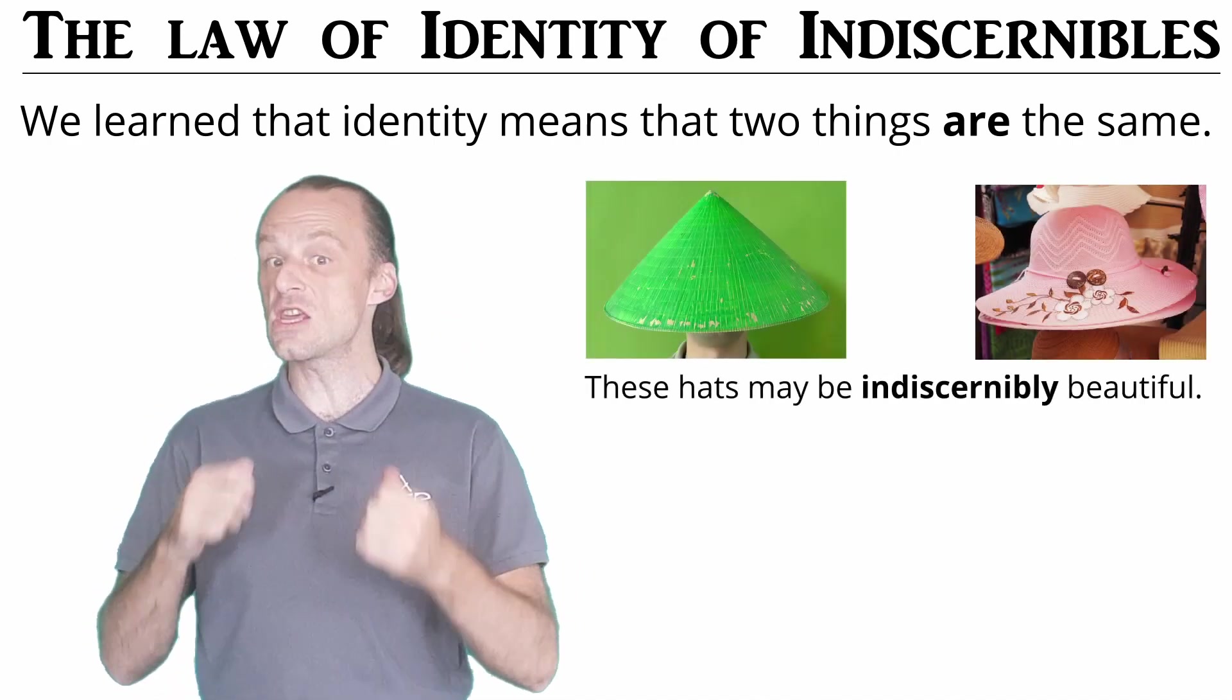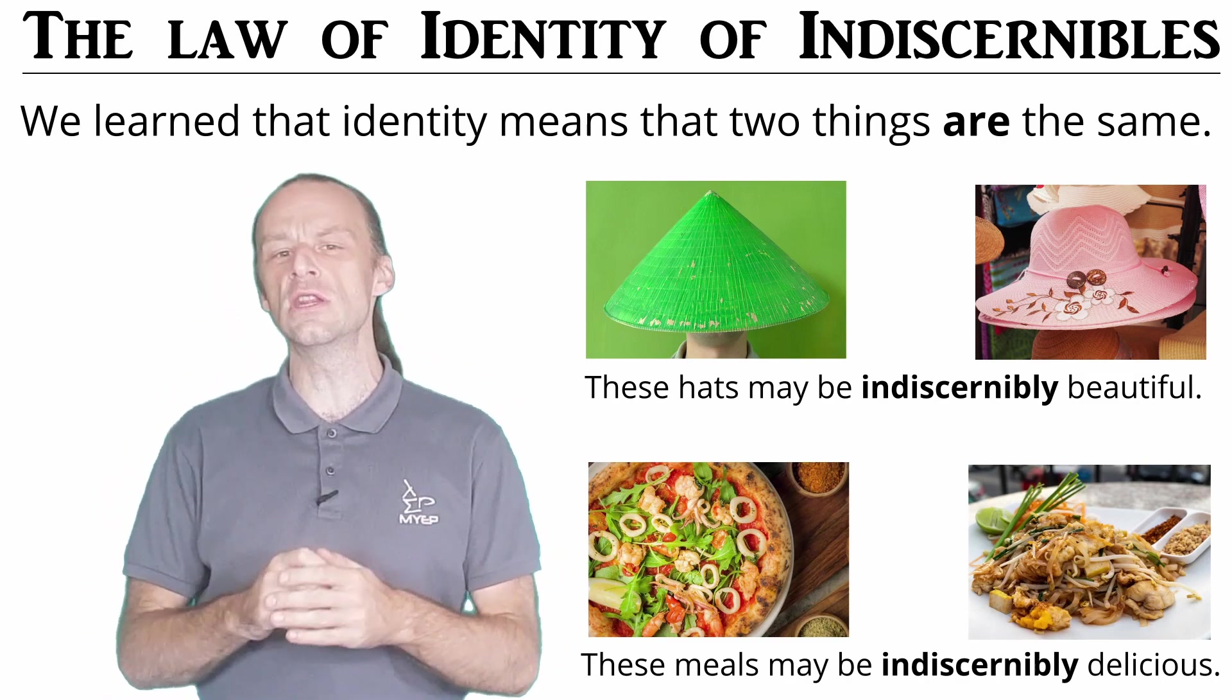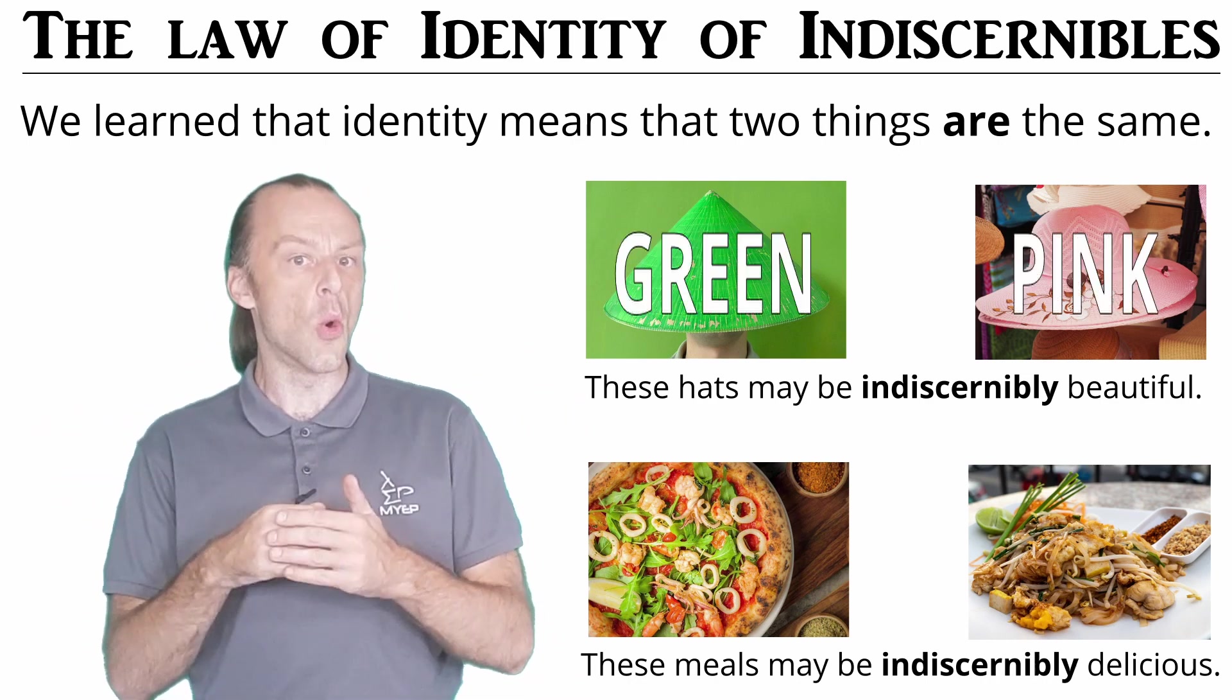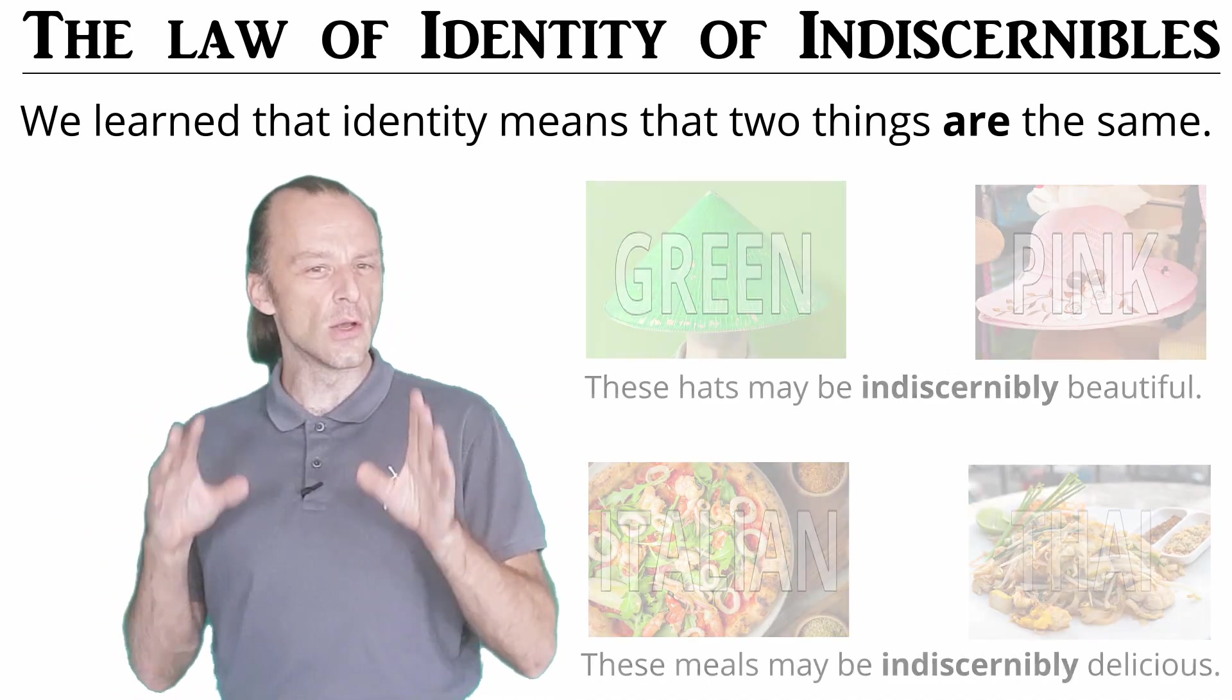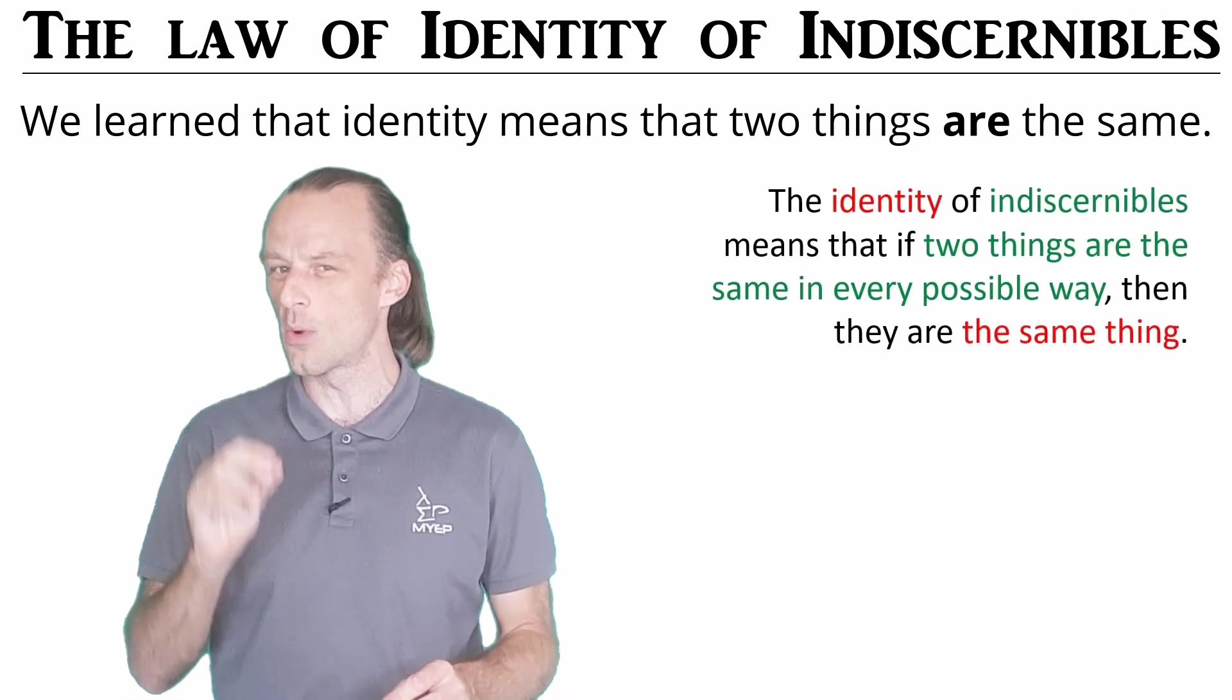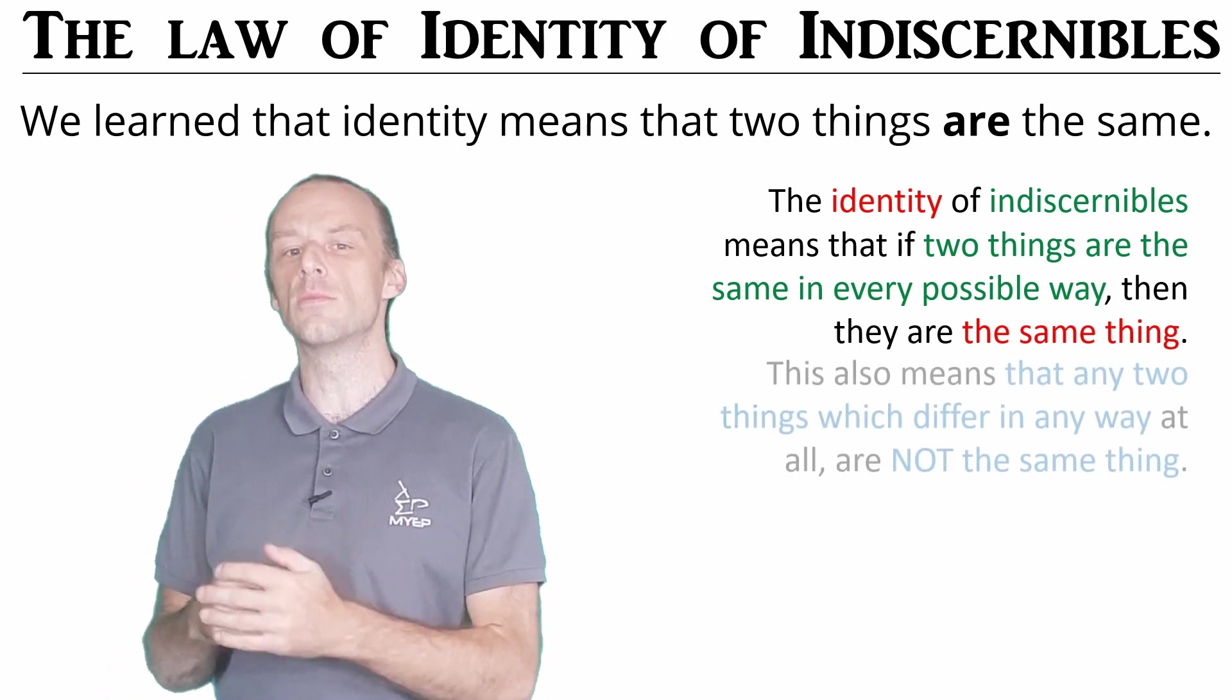They don't have to be completely the same. Maybe two hats are equally beautiful, or two meals are equally delicious. You can't discern between them in beauty or deliciousness, but you can still see that this hat is green and that hat is pink, or this meal is Italian and that meal is Thai. The law of identity of indiscernibles says that if two things are the same in every possible way, then they are the same thing. If there's no way to discern between them, they cannot be different objects.